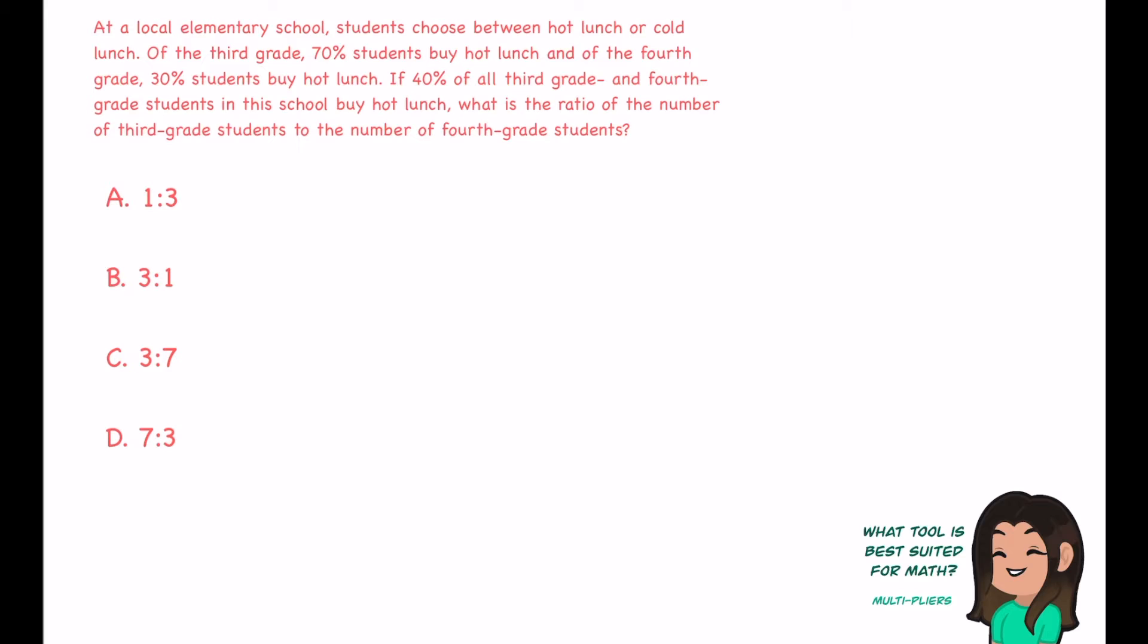At a local elementary school, students choose between hot lunch or cold lunch. Of the third grade, 70% of students buy hot lunch, and of the fourth grade, 30% of students buy hot lunch. If 40% of all third grade and fourth grade students in this school buy hot lunch, what is the ratio of the number of third grade students to the number of fourth grade students?